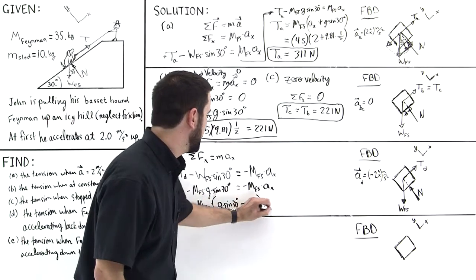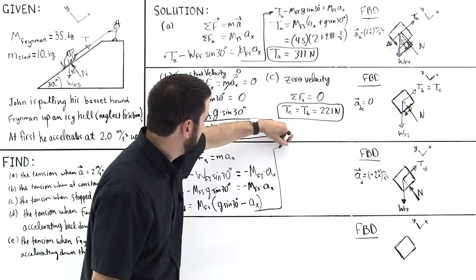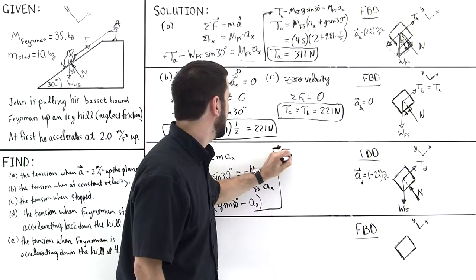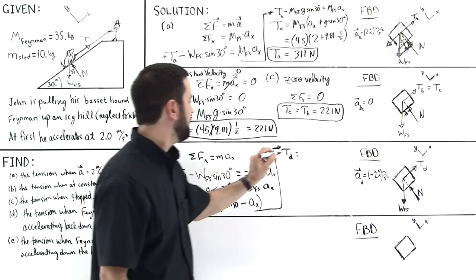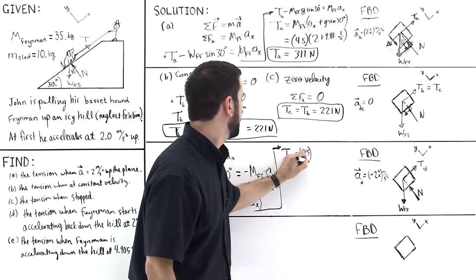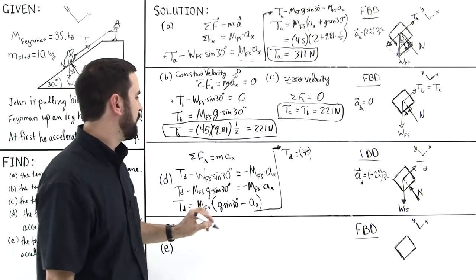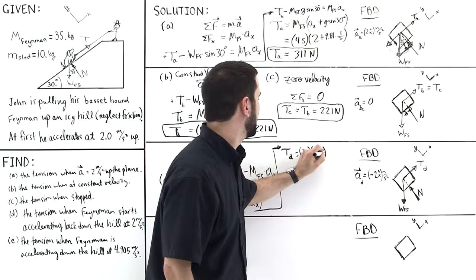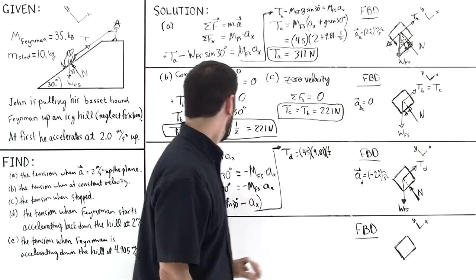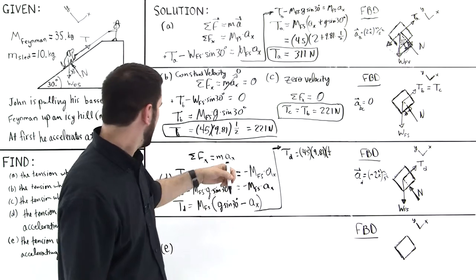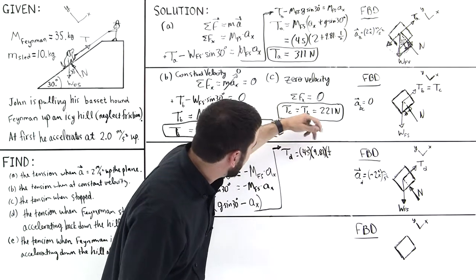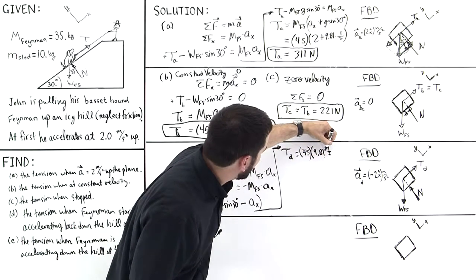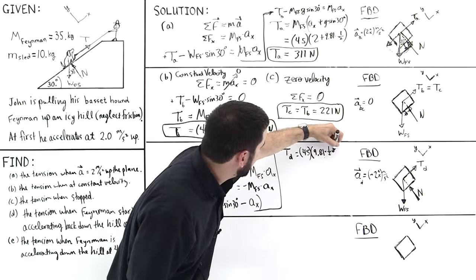So then we're going to come right here, and so the tension in part D will be equal to 45 for the mass of both of them added together. So here, 9.81, sine of 30 is a half, so multiplying times a half. And this is open parenthesis here, so we've got to put this. Let's do this. We'll do it like this. We'll just imply the multiplication with a little times sign right there.